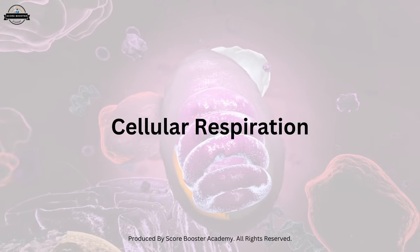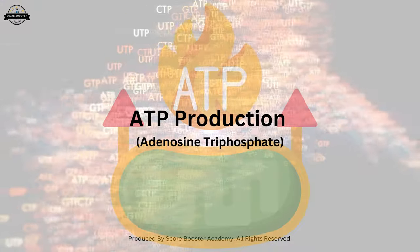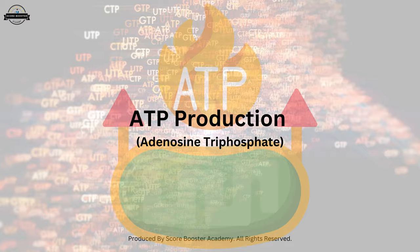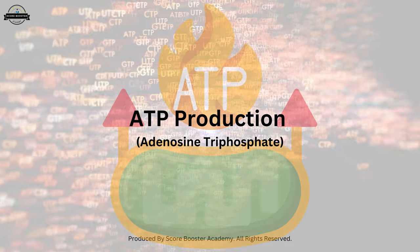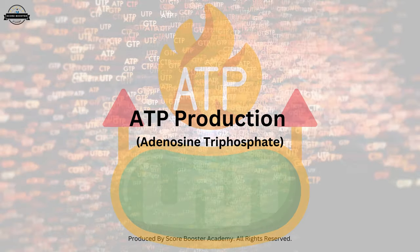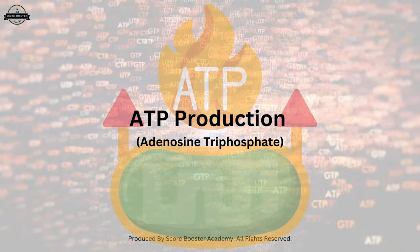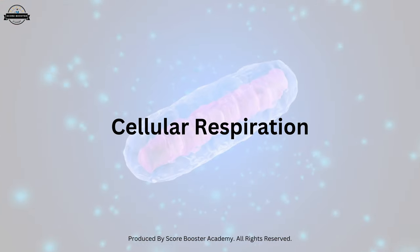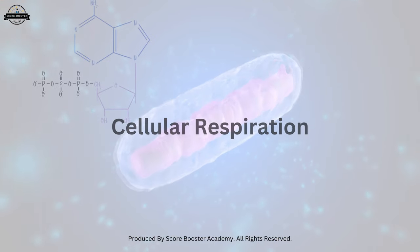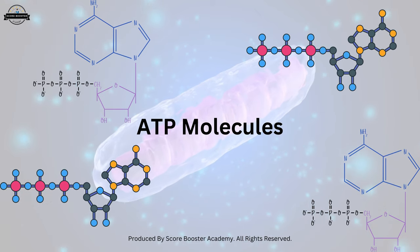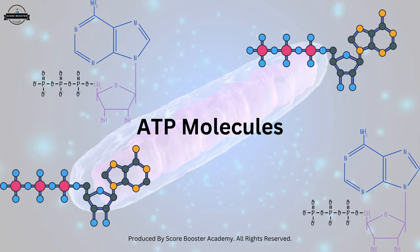Let's uncover the mitochondria's primary function: ATP production. Adenosine triphosphate serves as the energy currency of the cell. Through a series of intricate steps known as cellular respiration, mitochondria produce ATP molecules, providing energy to fuel cellular activities.